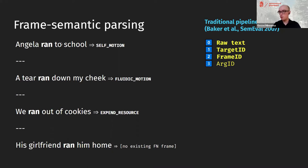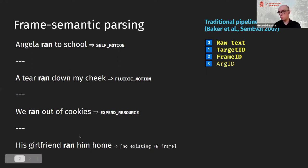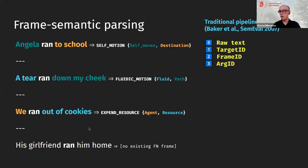Once you have those targets, the next step is frame identification — determining which FrameNet frame corresponds to each target. It can also turn out that a word doesn't actually evoke a frame; for example, 'his girlfriend ran him home,' meaning drove him home, is a sense currently not covered in FrameNet, so you would not want to tag anything there. The last step is argument identification, where you assign semantic role labels to each argument of the predicate.